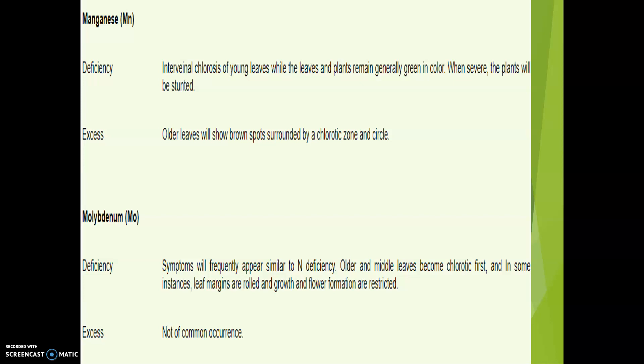Manganese is involved in the oxygen-evolving system of photosynthesis and is a component of the enzymes arginase and phototransferases. In case of manganese toxicity, the older leaves will show brown spots surrounded by a chlorotic zone. This is about manganese.